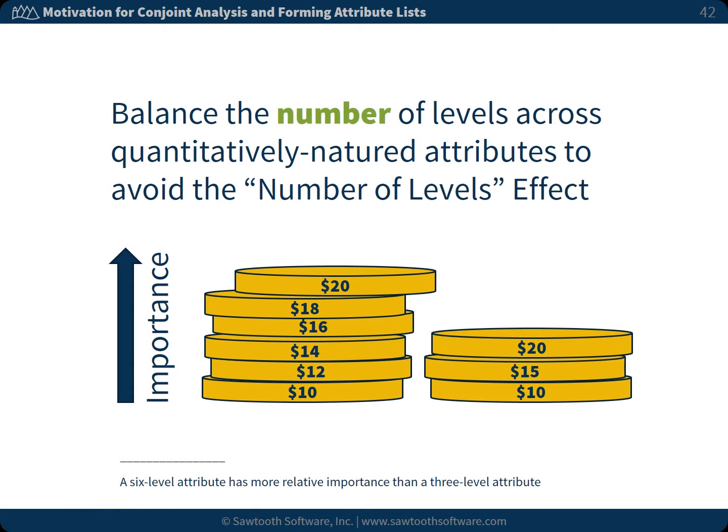Whenever possible, try to balance the number of levels across quantitatively-natured attributes. There is a well-known bias in conjoint analysis called the number-of-levels effect. Holding all else constant, attributes defined on more levels than others will be biased upwards in importance. For example, price defined as $10, $12, $14, $16, $18, and $20 will receive higher relative importance than when defined as $10, $15, and $20, even though the same range was measured. The number-of-levels effect is mainly a concern for quantitative attributes like price and speed. For categorical attributes like brand or color, it is probably best just to imitate what is available in the real world.